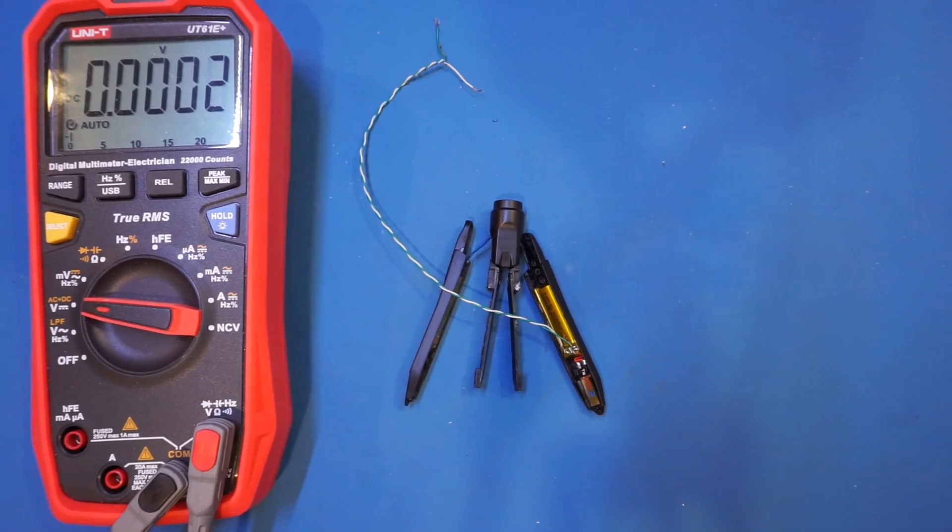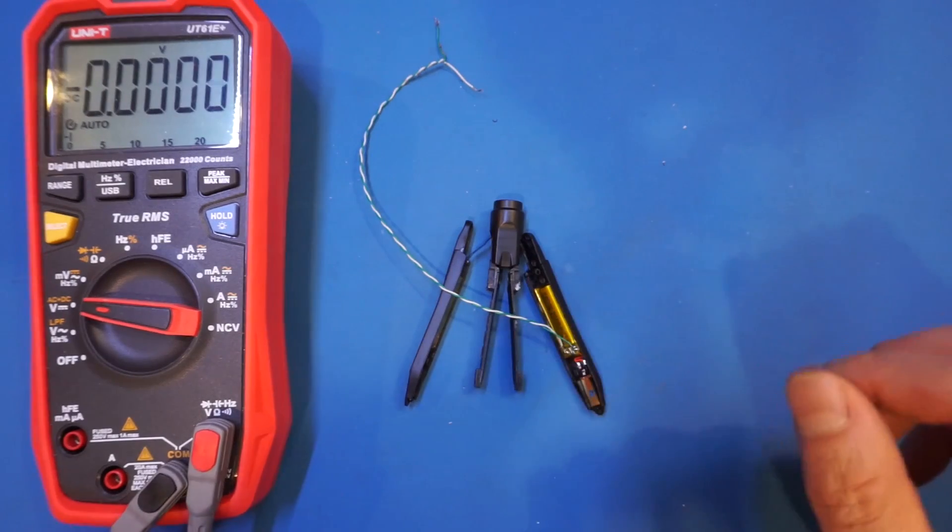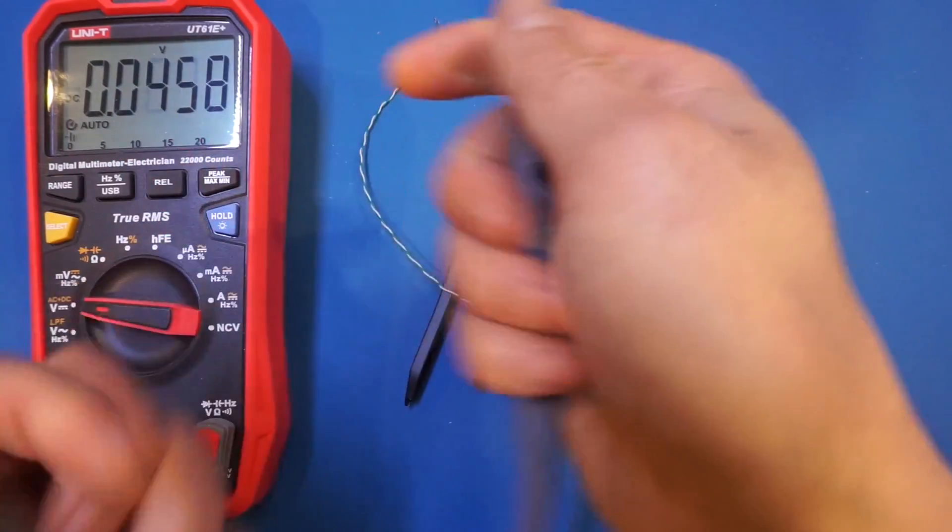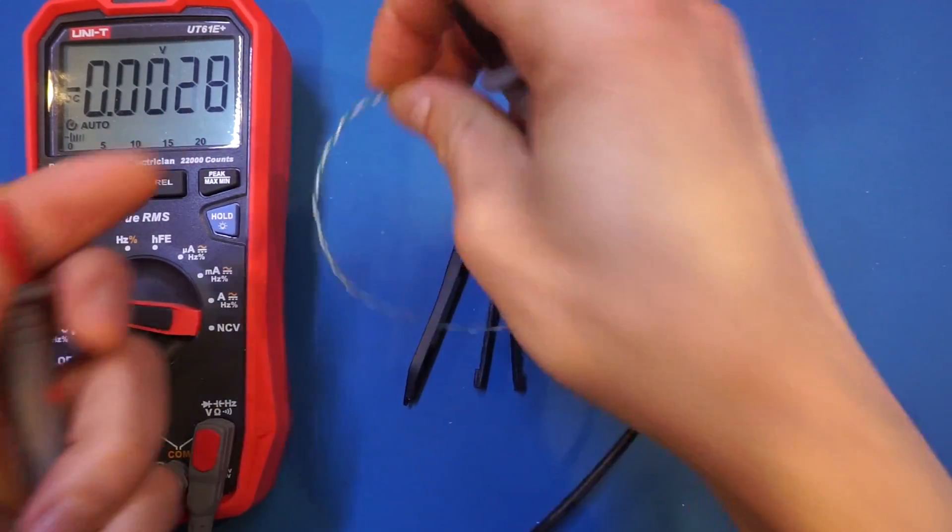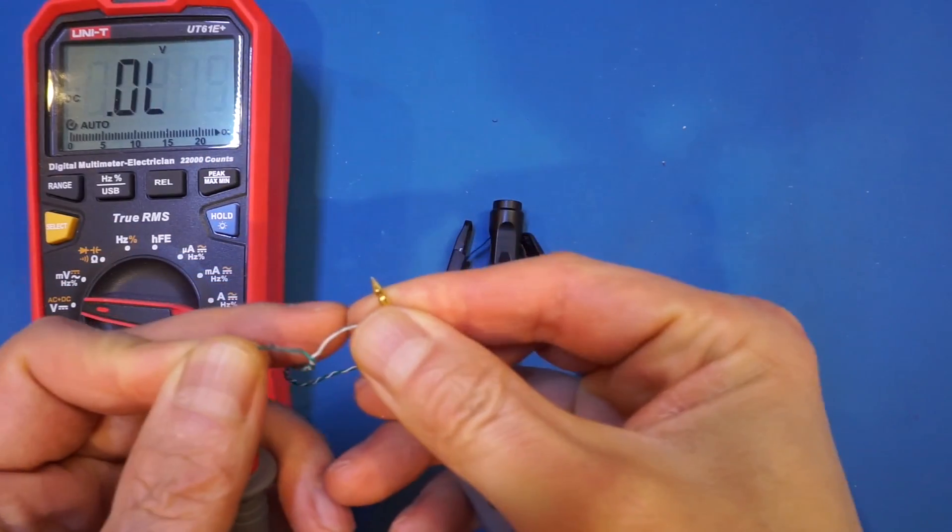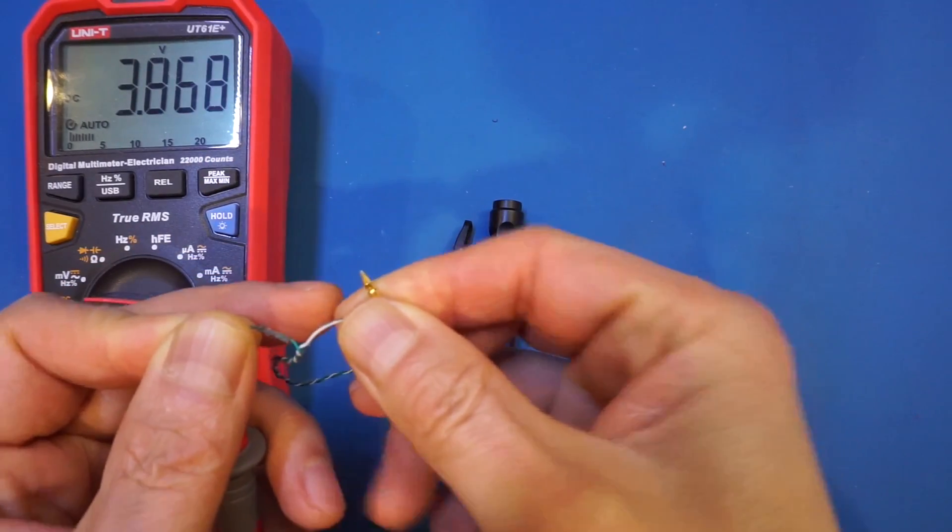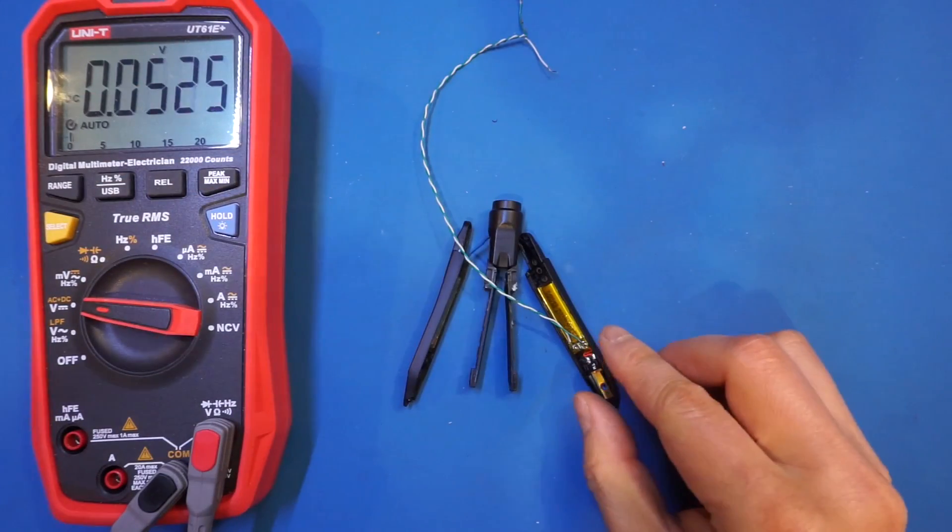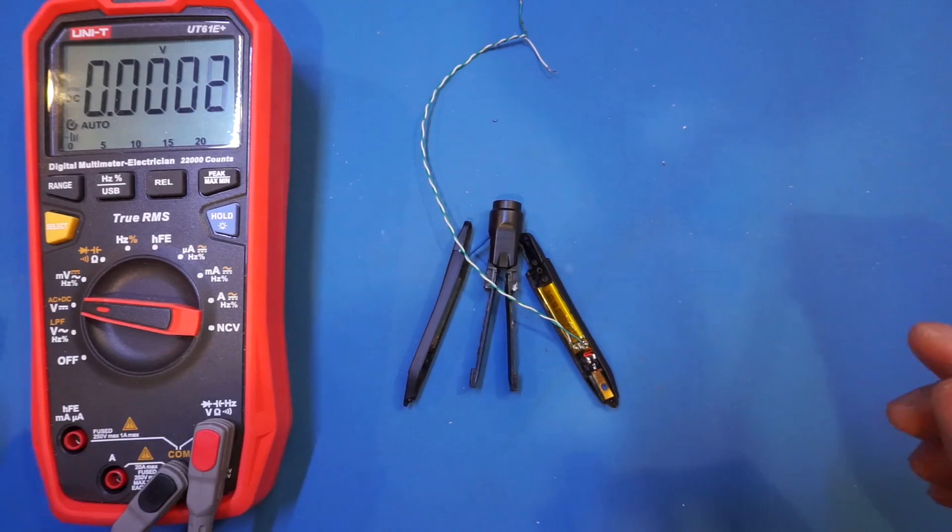I just used a bench power supply to charge the battery for a while, and right now we should have enough charge on the battery. So let's take a quick look here. Yep, we have 3.8 volts, and the battery is specced at 3.7 volts, so that's definitely enough.